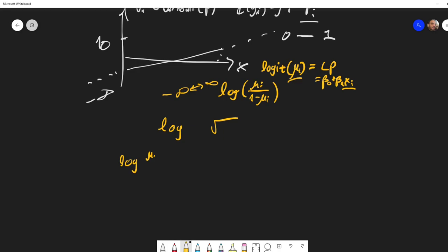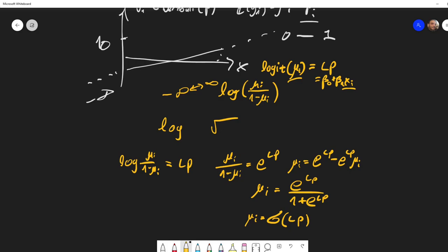So for the logit, if we have log(mu_i / (1 - mu_i)) equals some linear predictor, then if we take the exponent on both sides, we get that mu_i divided by 1 minus mu_i equals the exponent of LP. If we multiply this, this is the sigmoid function. So mu_i is actually equal to the sigmoid of LP, the linear predictor.